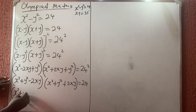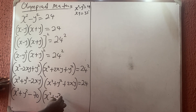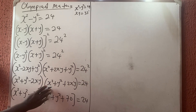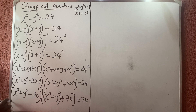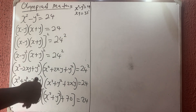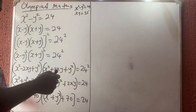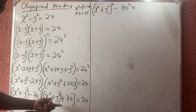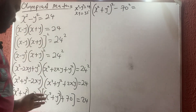Substituting, we get (x squared plus y squared minus 70)(x squared plus y squared plus 70) equals 24 squared. Notice this is again a difference of two squares pattern — (x squared plus y squared) squared minus 70 squared equals 24 squared.